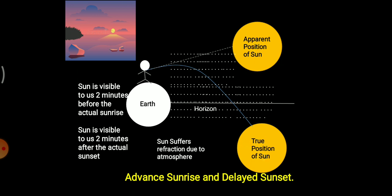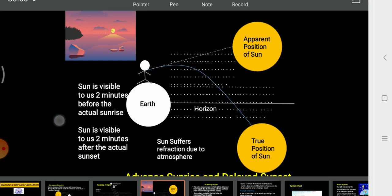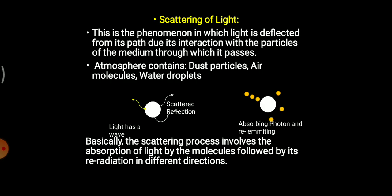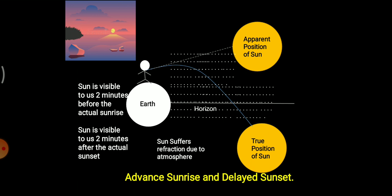In sunset also, the same thing happens. The sun still appears to us, but in reality the sun has already gone below the horizon. Because of this, the sun is visible to us about two minutes before the actual sunrise — because of atmospheric refraction. Again, the sun is visible to us two minutes after the actual sunset. After the actual sunset, the sun is still visible to us because of atmospheric refraction.